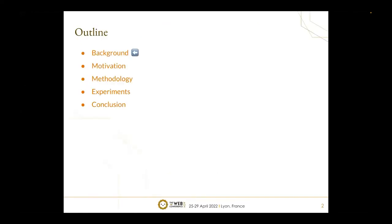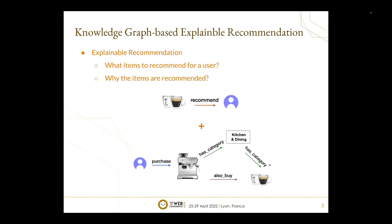Let me introduce the background of our work. Different from traditional recommendation that only needs to answer what items to recommend for each user, Explainable Recommendation further requires answering why the items are recommended. For example, if we recommend Espresso Max to a user, we also want to know the reason. A possible explanation is that the user purchased an Espresso machine before, they both belong to the same kitchen and dining category, and the Espresso machine and Espresso Max are usually bought together by users.